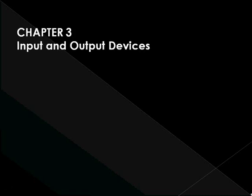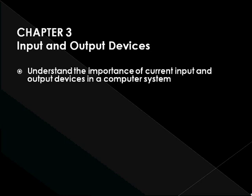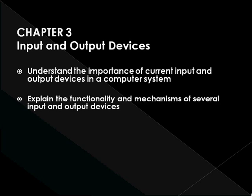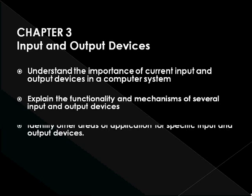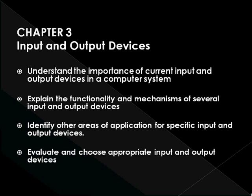Input and Output Devices. Computer input and output devices have undergone remarkable development since their existence. This chapter covers the different types of computer input and output devices. The primary function of input devices is getting data and instructions into the computer. Popular input devices are keyboard, mouse, scanner, microphone, and webcam.